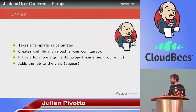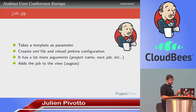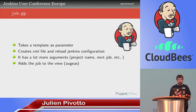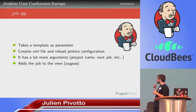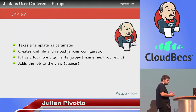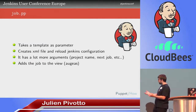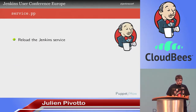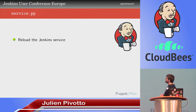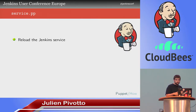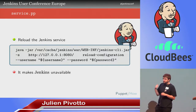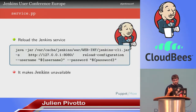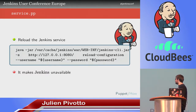We also manage service.pp to handle reloading of the Jenkins configuration. A job in Jenkins is just a directory with a configuration file. You can add a lot of arguments to your template: the project name, the next jobs, and you can decide to add the job to a view. So it's not just creating new jobs — we are creating a job and specifically adding it to a view. Service.pp means you will reload Jenkins using the command-line tool, but the problem is it makes Jenkins unavailable, which is one of the problems we have and I will tell you about later.